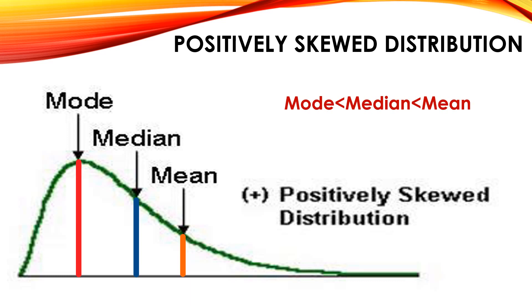In positively skewed distribution, mode is less than median, which is less than mean. In normal distribution, mean, median, and mode are all at the same point. But in positively skewed distribution, mean and median are pulled towards the positive side. The more skewed the distribution, the greater the difference between mean, median, and mode. If less skewed, they are closer — but mode is always less than median, which is less than mean.